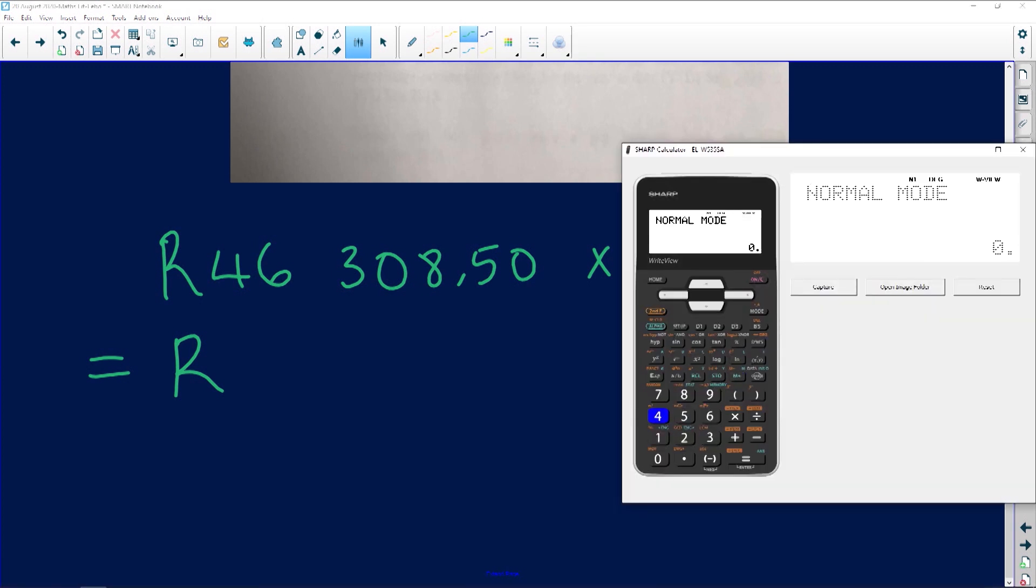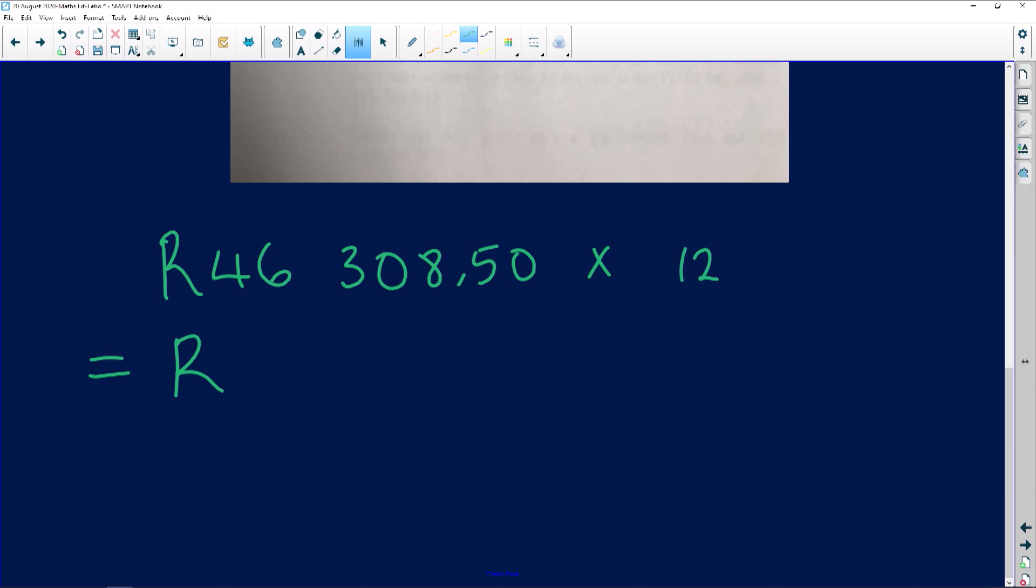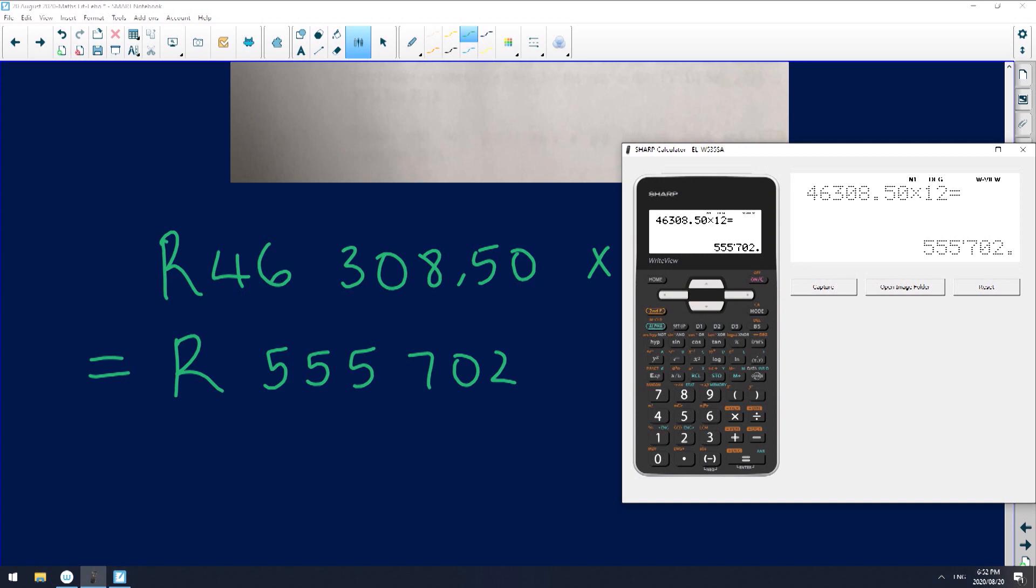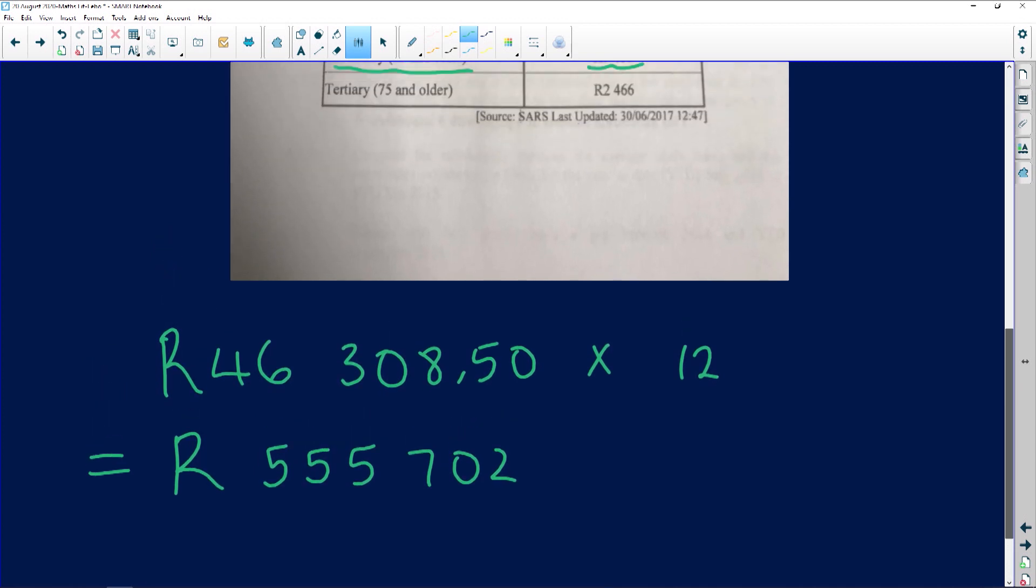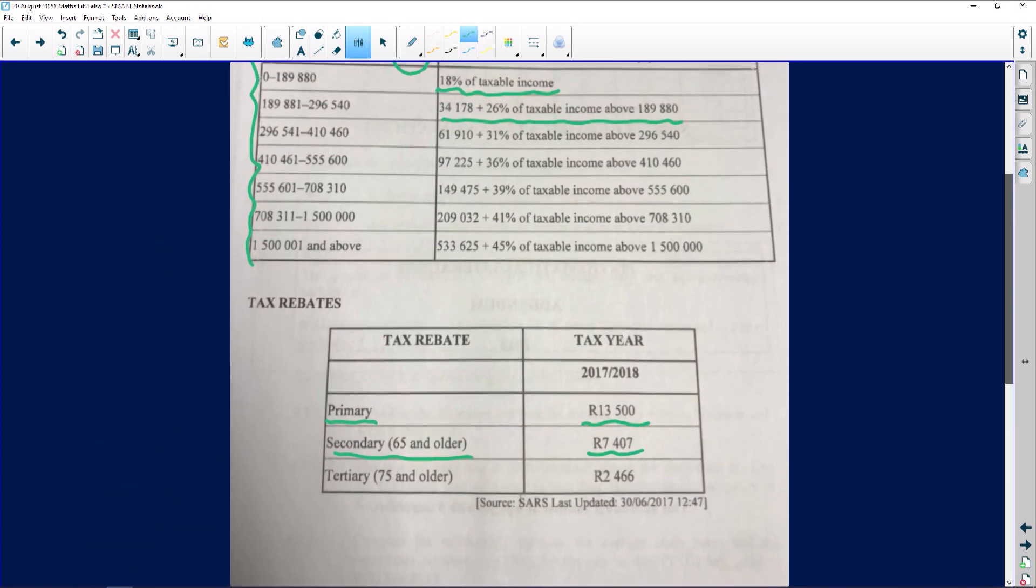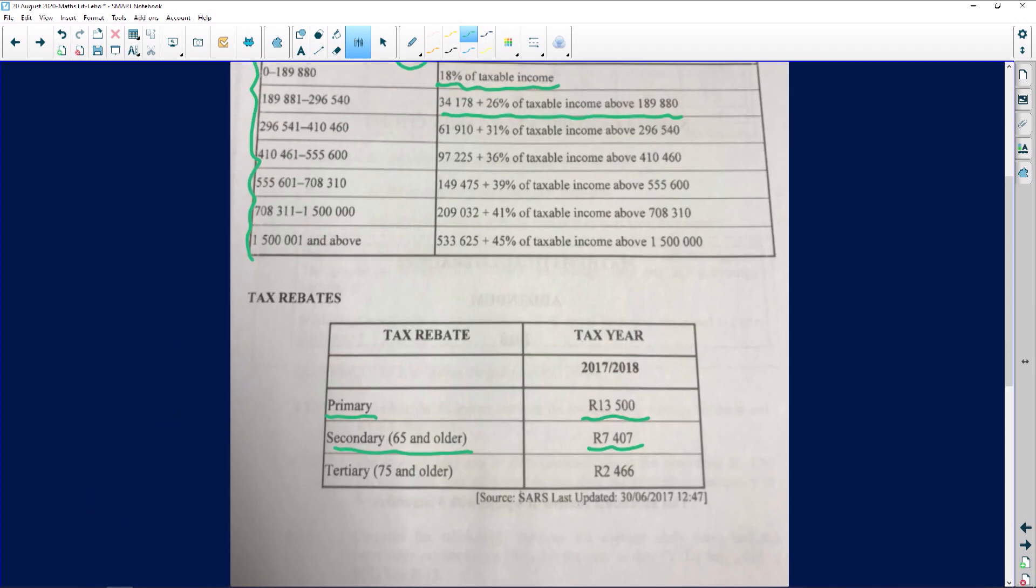And there's no medical aid, like we've been told here, so we don't have to put in anything in terms of medical aid. R46,308.50 times 12 equals R555,702. Are there any cents? No cents, stunning. So now let's go look at the tax bracket that this person qualifies for. R555,702, this person qualifies for this tax bracket over here.